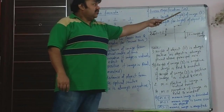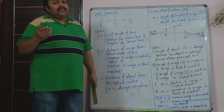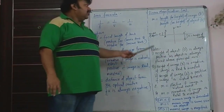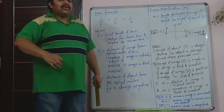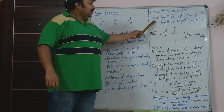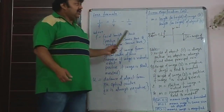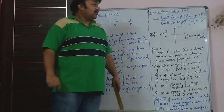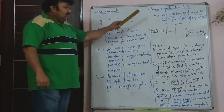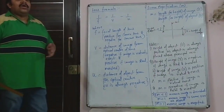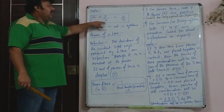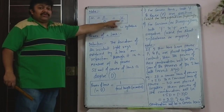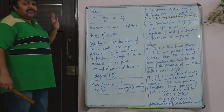Instead of I/O, magnification can also be written as v/u — where v is the distance of image from optical center and u is the distance of object from optical center. The derivation from congruency is not in the syllabus, so you don't need to learn it. Just remember the formula: magnification = I/O = v/u.